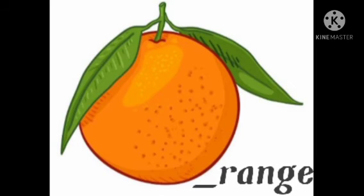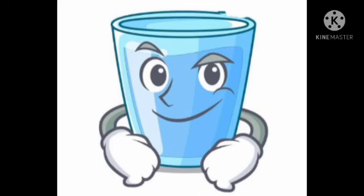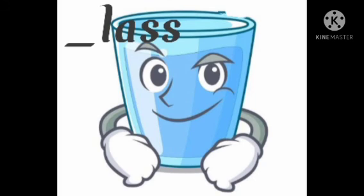Next is orange. O, R, A, N, G, A — orange. O is the initial sound. Next is glass. G, L, S — glass. G is the initial sound.